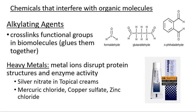Heavy metals can interfere with cell growth by disrupting proteins. A metal ion can displace a cofactor — for example, copper sulfate displaces the magnesium at the center of the chlorophyll molecule, shutting it down. This can be used to eliminate algae in pools. Silver nitrate is often found in topical creams and is now being incorporated into bandage dressings to reduce infection risk, especially for burn victims. These ionic metals tend to be bacteriostatic and act locally.